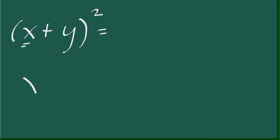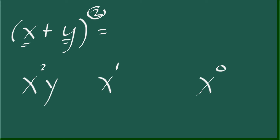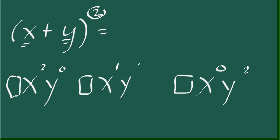Start with x raised to the two, and then for subsequent terms, reduce the exponent by one until you reach zero. So the exponents go two, one, zero. Then proceed with y and reverse the pattern, starting at zero, then one, then two. Remember, the first and last coefficients are always going to be one.